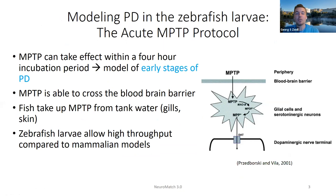For my Parkinson's disease protocol, I use the acute MPTP protocol, which can take effect within four-hour incubation periods and models the early stages of Parkinson's disease, focusing on inflammation. What's so great about MPTP is that it's able to freely cross the blood-brain barrier, where it's then converted to MPP+, which can be taken up by dopaminergic nerve terminals through dopamine transporters.